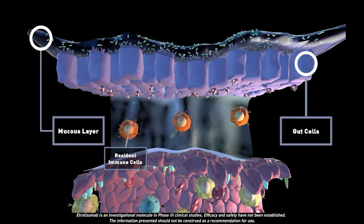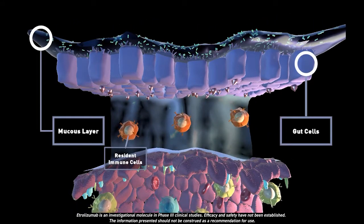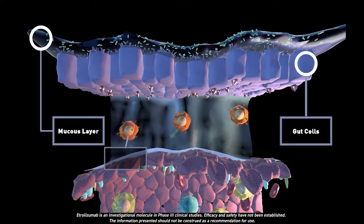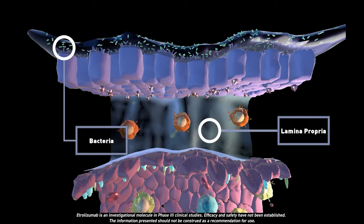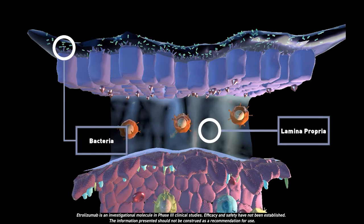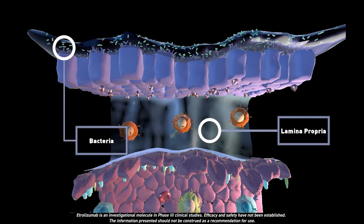A healthy gut is formed by tightly tethered cells protected by a thick mucous layer. Together, they prevent the infiltration of gut bacteria into the lamina propria, where they can cause inflammation and infection.